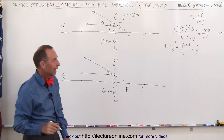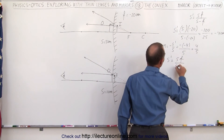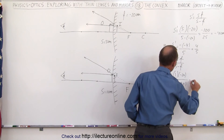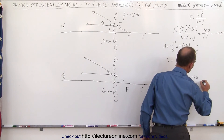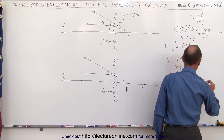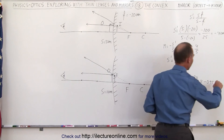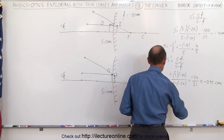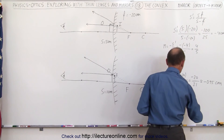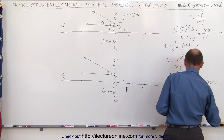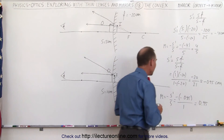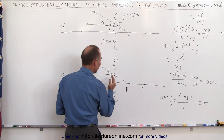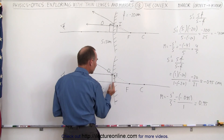Mathematically, using the equation S prime equals S times F over S minus F, which is 1 times minus 20, divided by 1 minus minus 20, which is minus 20 over positive 21 — roughly equal to minus 0.95 centimeters. Negative means it's a virtual image behind the mirror. The magnification M equals minus S prime over S, which is minus times minus 0.95 divided by 1, equal to positive 0.95. The image is 95% the size of the object, and the image distance is 0.95 centimeters from the mirror, as the object is one centimeter in front of it.